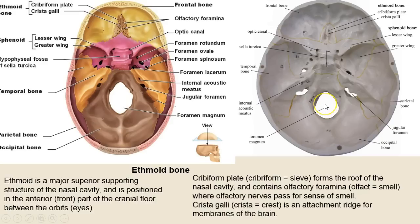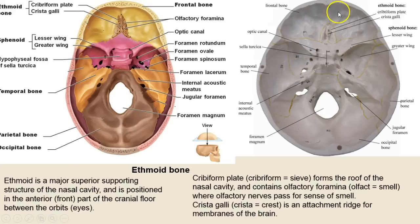There's the foramen magnum I talked about. To the right I talked about the acoustic meatus of the temporal bone, which you can see here on either side. The frontal bone is here, and the occipital is in the back — a nice little review.